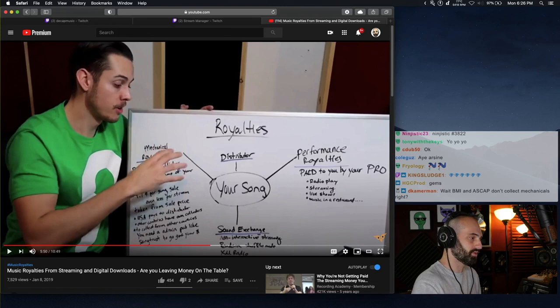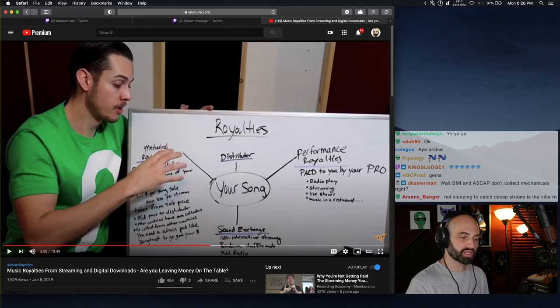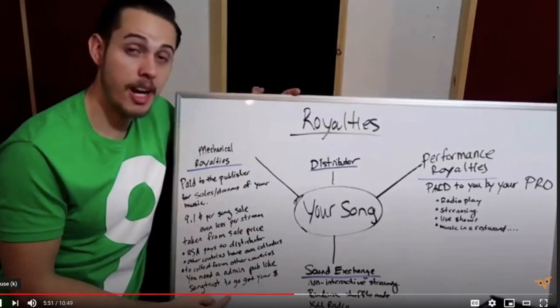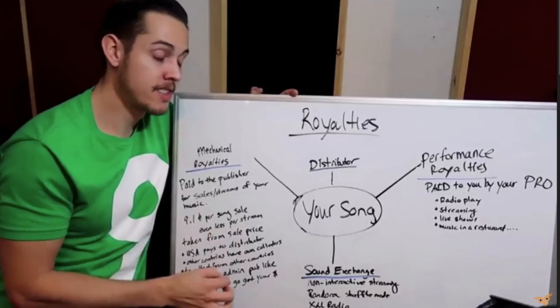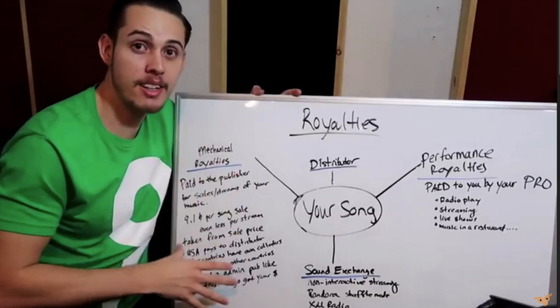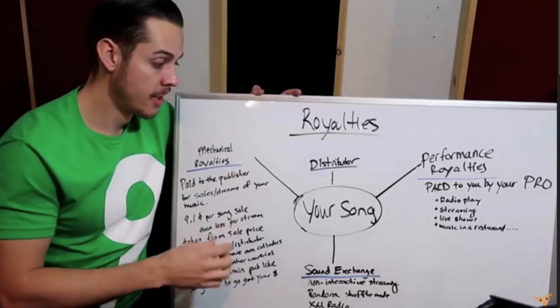Don't underestimate how much money you may have sitting overseas. If you've been releasing a lot of music, you may have a significant amount there and not know it — you won't know until you sign up with a publishing administrator. Since it's only about $99, I highly recommend it if you've been releasing music for a while. Personally, I'd say don't sign up unless your overseas sales and streams are high enough to justify the $100 and 15%.